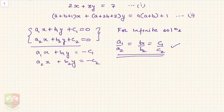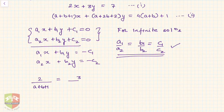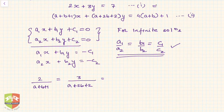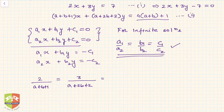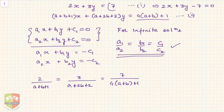Now applying this condition to our equations: a1 = 2 and a2 = (a + b + 1), b1 = 3 and b2 = (a + 2b + 2). Since both constant terms (7 and 4a + b + 1) are on the right-hand side, we can write: 2/(a + b + 1) = 3/(a + 2b + 2) = 7/(4a + b + 1).